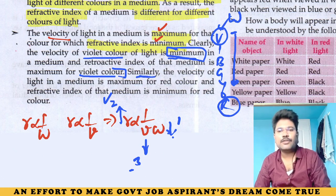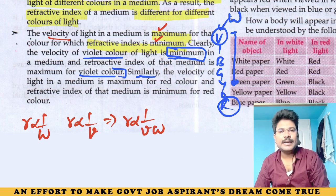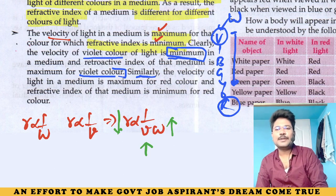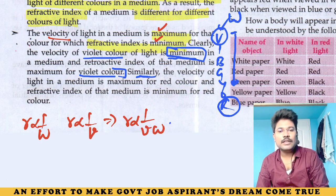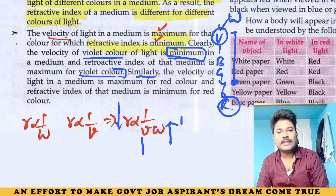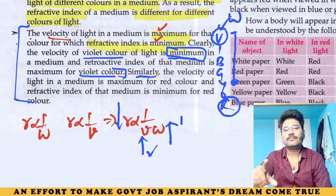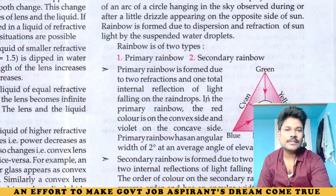Similarly, velocity of light in a medium is maximum for red — because the refractive index is minimum. Why is the refractive index minimum for red? Because wavelength of red is highest. Wavelength of red is maximum and refractive index of red is minimum; therefore, velocity of red is maximum. This is not a puzzle — the question paper setter is logical.